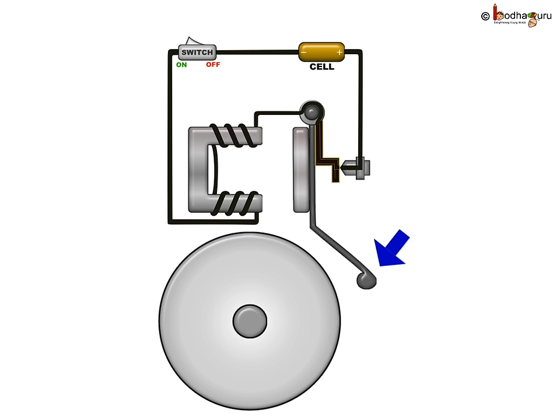This arm has a hammer attached to it at one end. Let us call it a clapper. A small gong or bell is also placed near the hammer. See, there is a contact screw near the clapper.